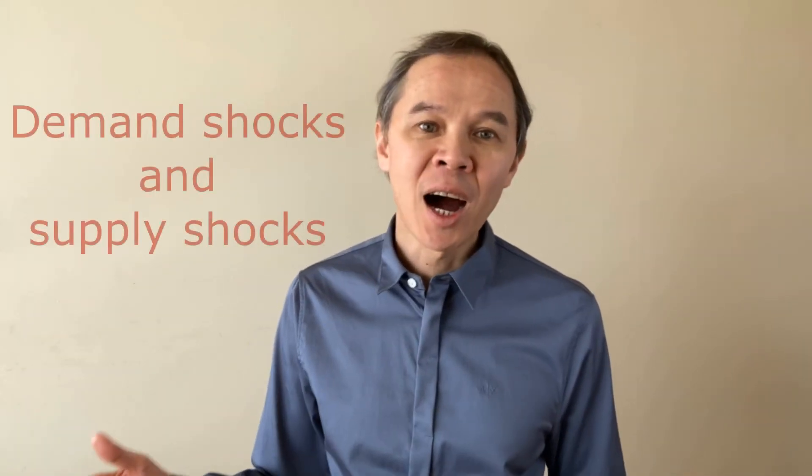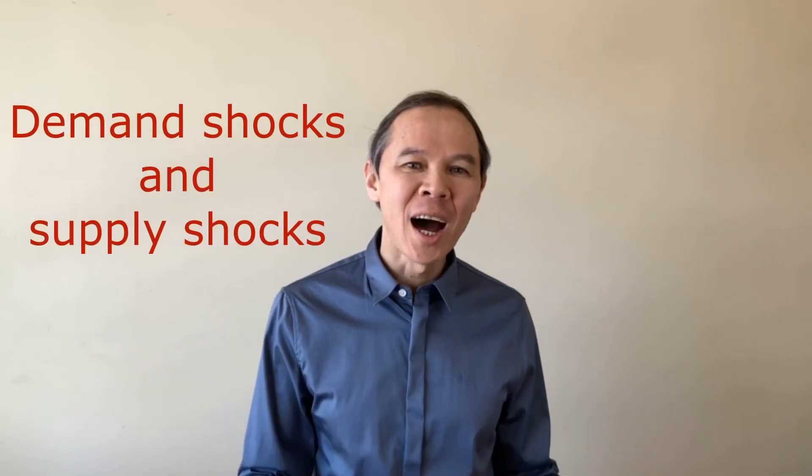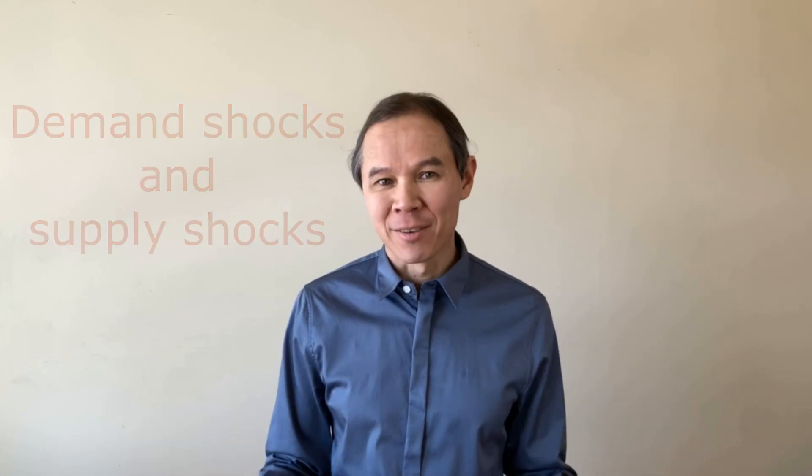But in real life, something always happens. People spend more. Technology improves. Businesses ruin environment. Stuff happens. In economics, we call such events shocks: demand shocks and supply shocks. How to show the demand shocks and supply shocks on the AD-AS graph, you can learn that in my next videos. So stay tuned and thank you for watching and learning.